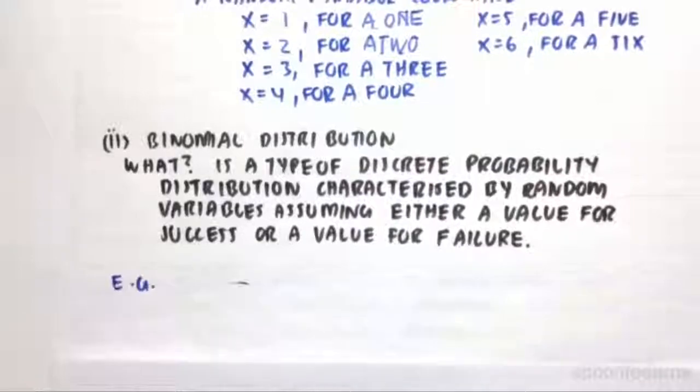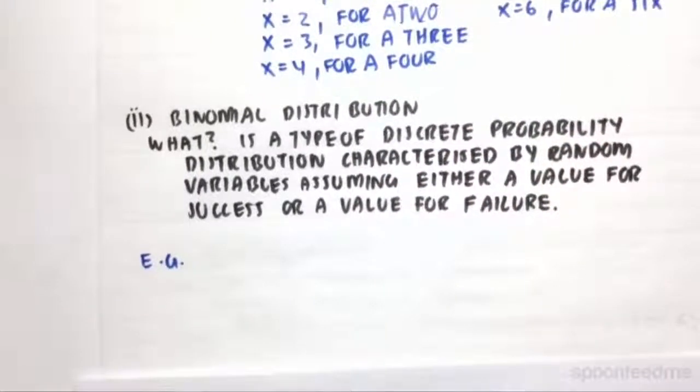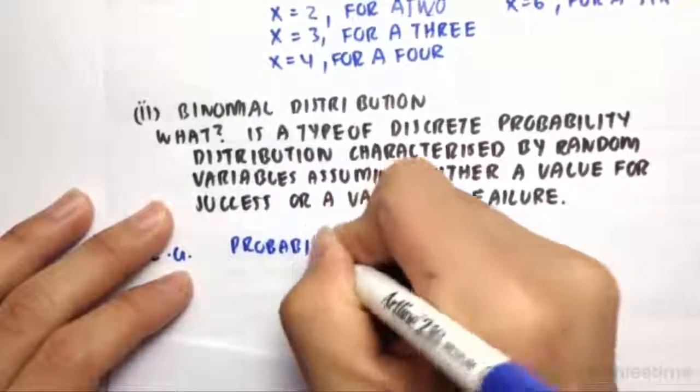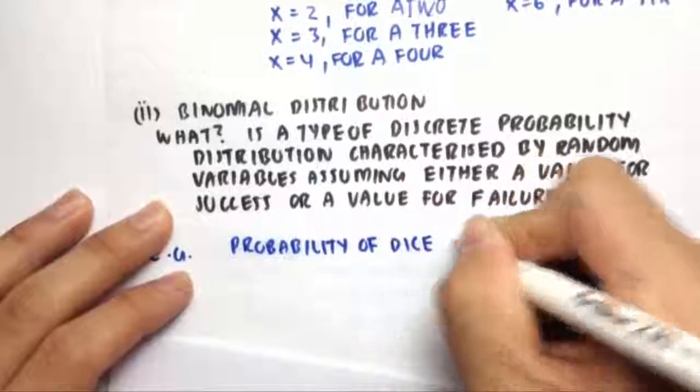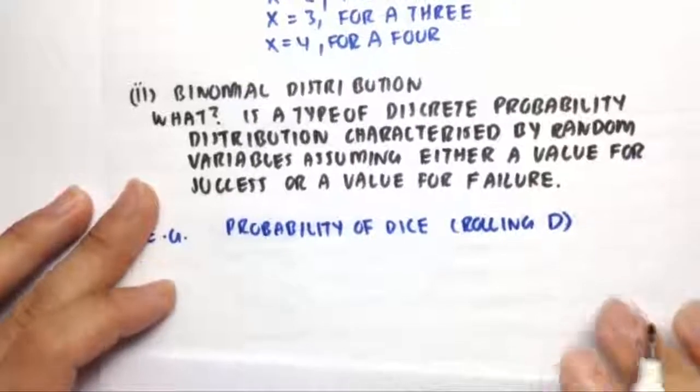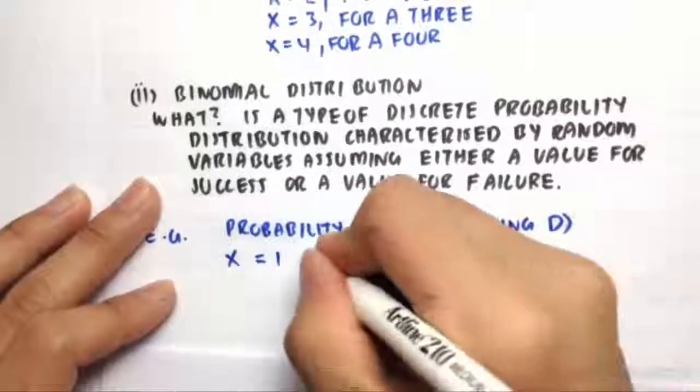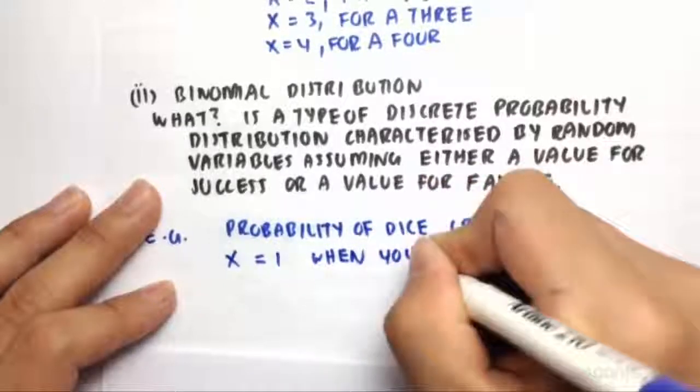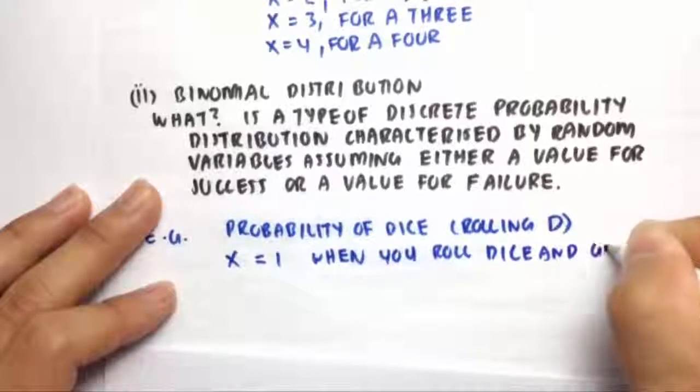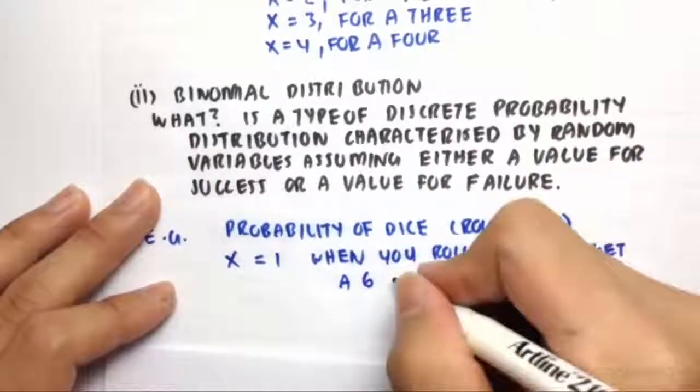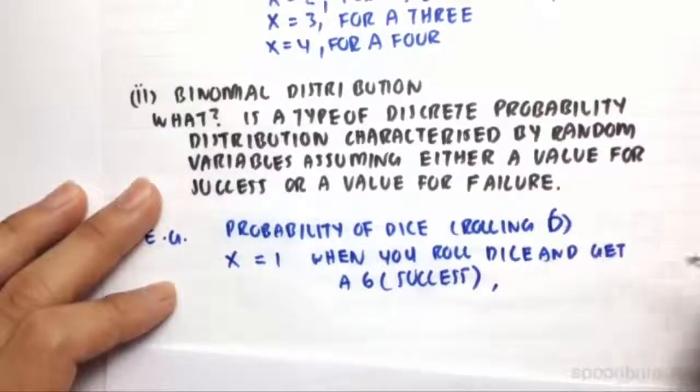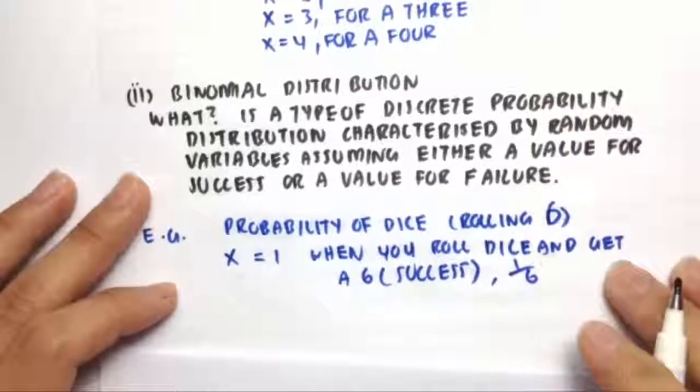For example, if we're using the probability of a dice rolling a 6, it would give a random variable x equal to 1 when you roll a dice and get a 6. That would classify as success - getting a 6 - and that's when we give it a value of 1 with a probability of 1 in 6 of rolling a 6.